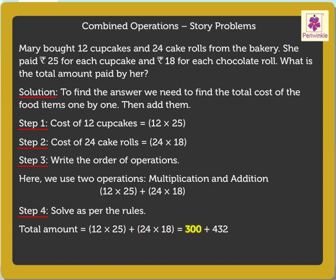On adding 300 plus 432, we get the total amount as 732. Thus, the total amount paid by Mary is 732 rupees.